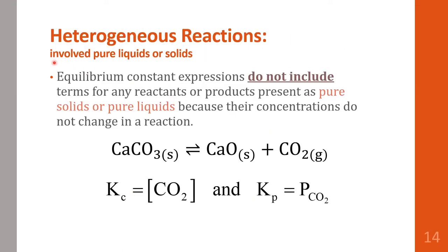The last topic about the equilibrium constant is heterogeneous reactions. These are reactions that involve more than one phase of substance — in other words, reactions that involve pure liquids or pure solids. For the equilibrium constant expression of a heterogeneous reaction, we do not include the terms for any reactants or products that are present as pure solids or pure liquids, because we consider their concentrations to not change during the reaction.